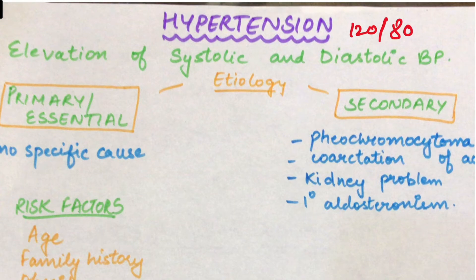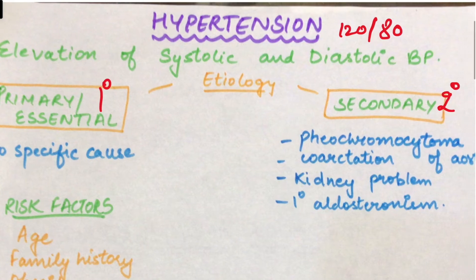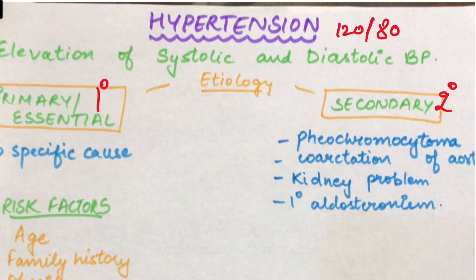Etiology ka matlab hota hai uska cause ya reason kya hai. Toh kyun hota hai? Ek hai primary aur doosri hai secondary. Primary ka matlab hai ki us hypertension ka koi underlying cause nahi hai. Lekin secondary me koi aisi bimari thi jis ki wajah se hypertension hua.